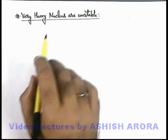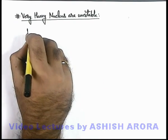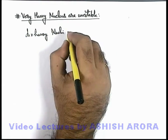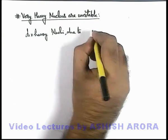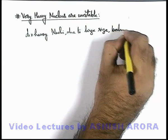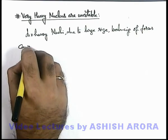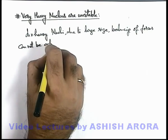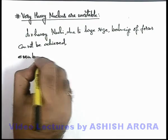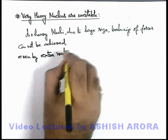Now we'll study that very heavy nuclei are unstable. In very heavy nuclei, due to large size, balancing of forces cannot be achieved, even by extra neutrons due to size.